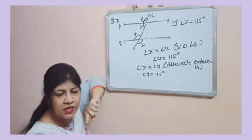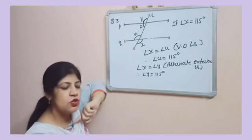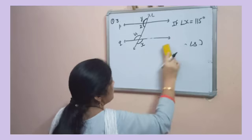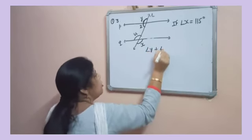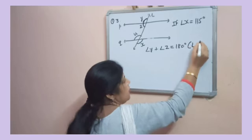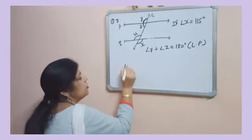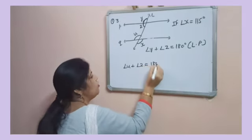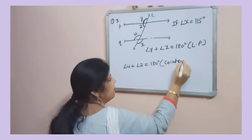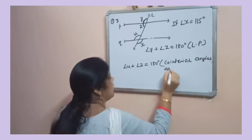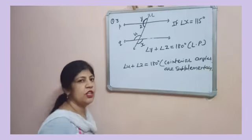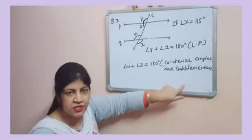And Z plus Y equals 180 degrees by linear pair. So that is your wish, you can use any relation. Now I am using linear pair relation. Angle Y plus angle Z equals 180 degrees. Why they are 180 degrees? Linear pair. If you write U plus Z equals 180 degrees, then what will be the reason? Co-interior angles are supplementary. So in this case, you have to write this reason.